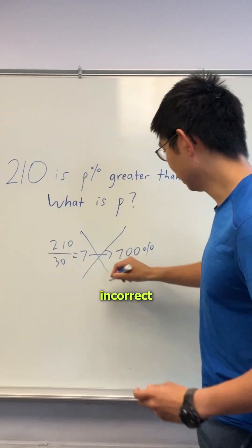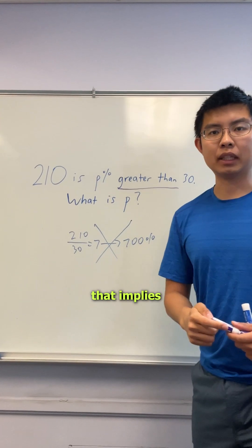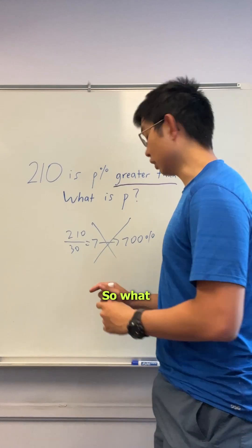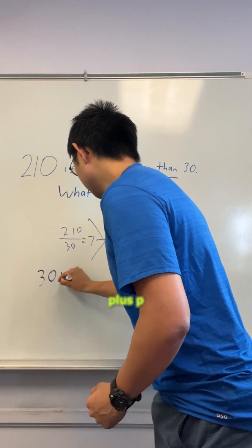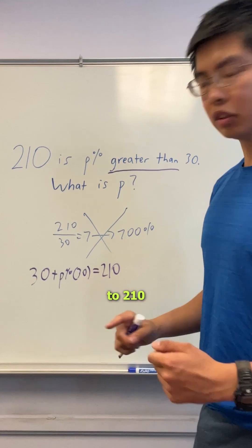However, this is incorrect. When you see the keyword greater than, that implies some kind of addition. What you're really saying is you're going to take 30 plus P percent of 30, and that gets you to 210.